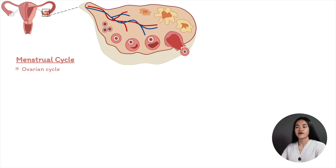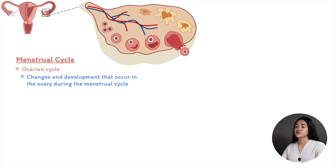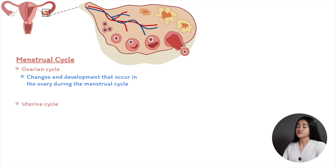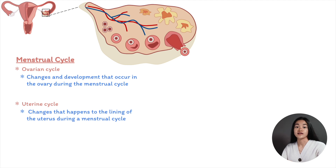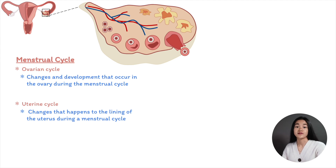The ovarian cycle describes the changes in development that occur in the ovary during the menstrual cycle, causing maturation of a follicle, ovulation, and the formation of the corpus luteum. The uterine cycle describes the changes that happen to the lining of the uterus — the endometrium — during a menstrual cycle, to prepare for a potential implantation of a blastocyst.